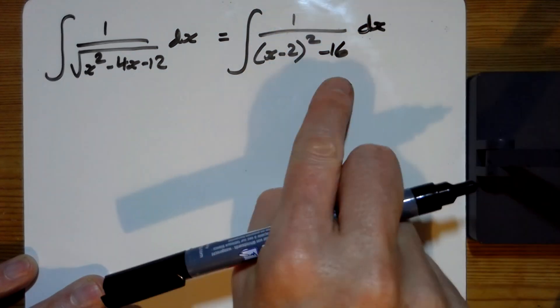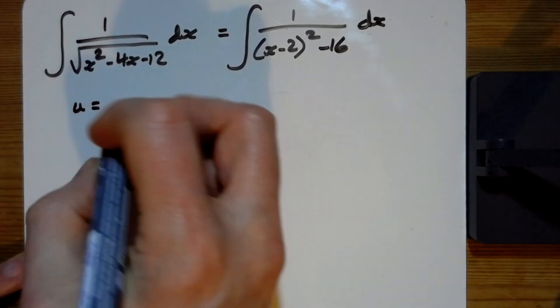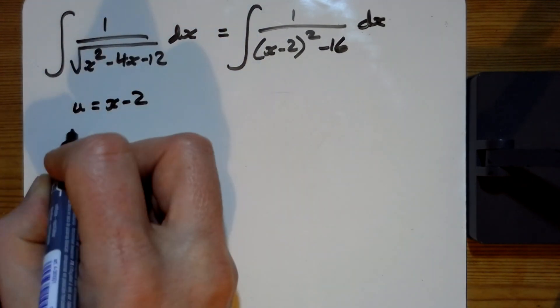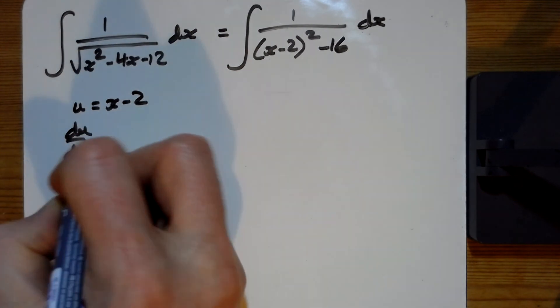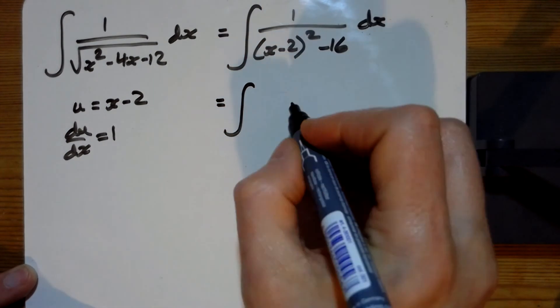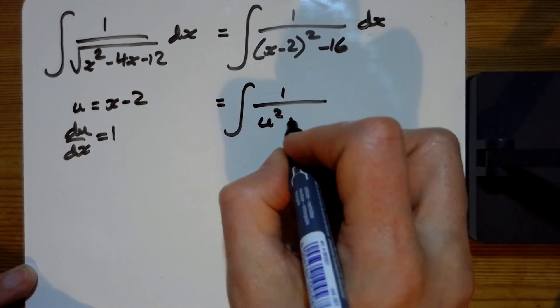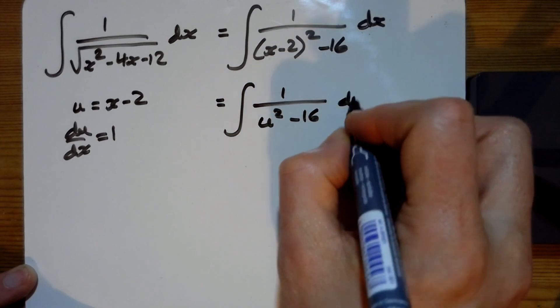Now this looks like the format we've been working with for our integrals, and we just let u equal x take away 2. The beauty of that is that then du by dx is equal to 1, so the dx and the du are both the same, and this integral changes to u squared take away 16 du.